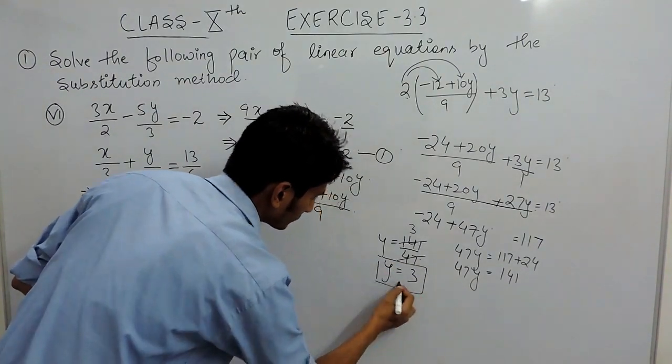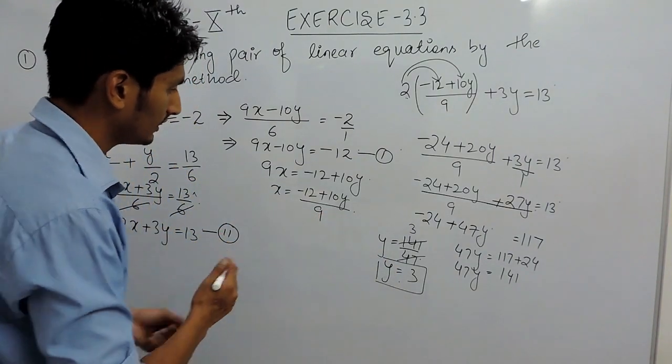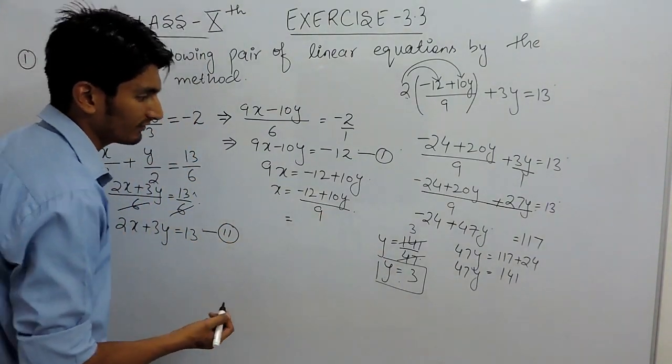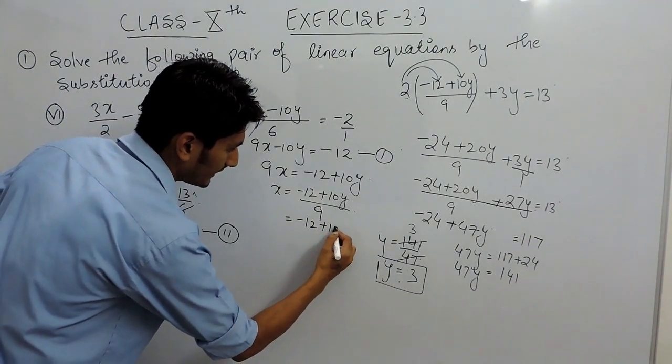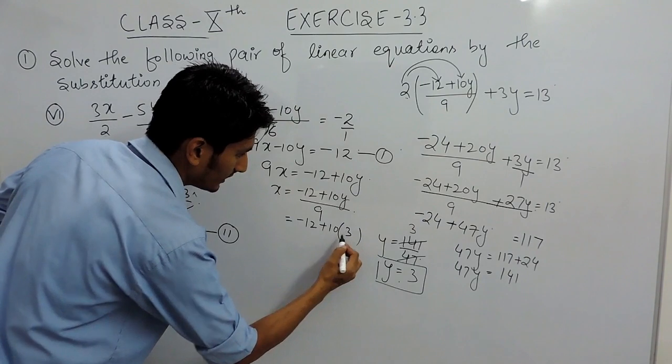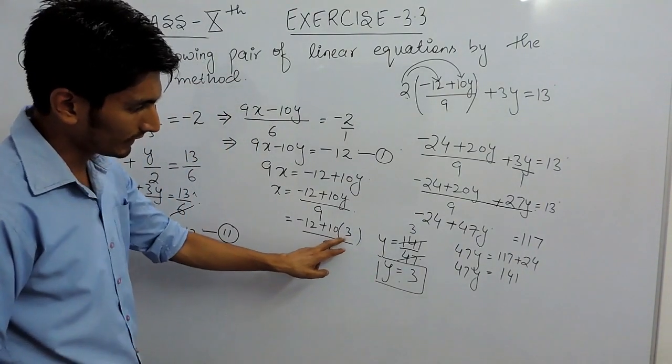Now we will be able to find the value of x, and this is minus 12 plus 10 into the value of y is 3 upon 9. So when you multiply this, this becomes 30.